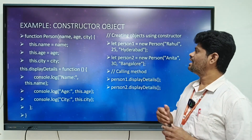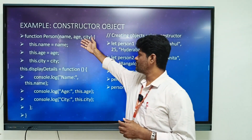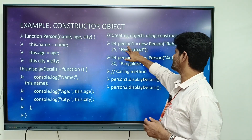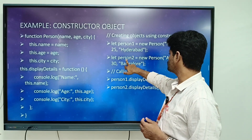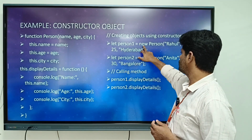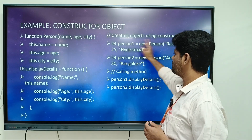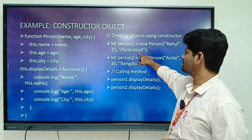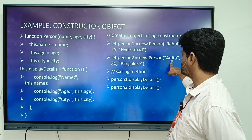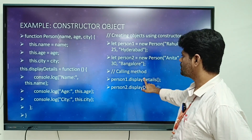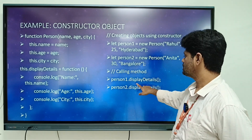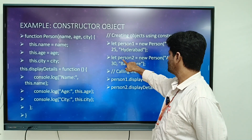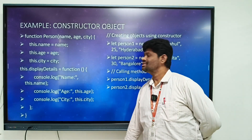Here is an example of a constructor object. We create a function 'Person' with three parameters: name, age, and city. We create two objects — 'person1' and 'person2' — using the new keyword, passing values: Rahul, age 25, city Hyderabad for person1, and Anita, age 30, city Bangalore for person2. We then call the methods using person1.displayDetails() and person2.displayDetails().